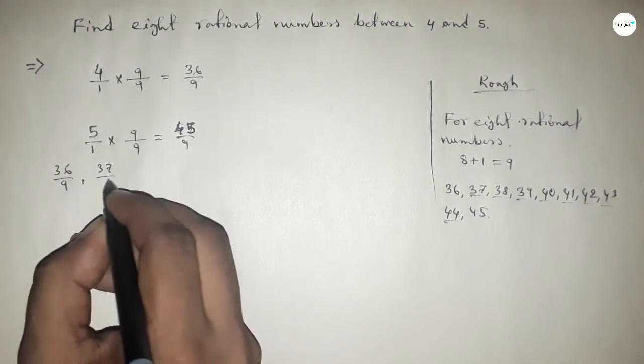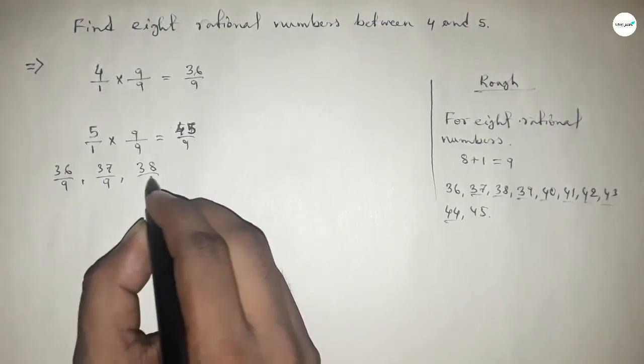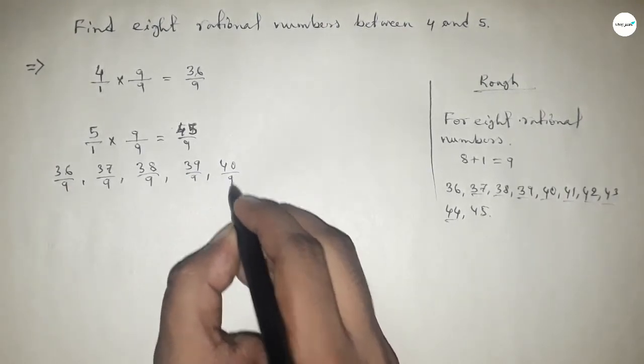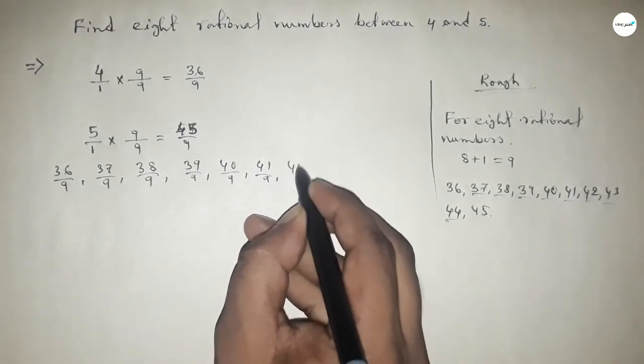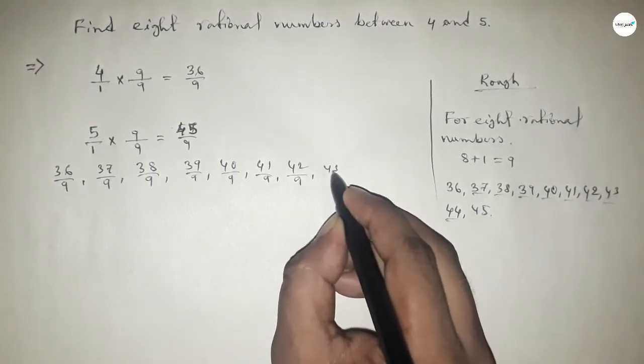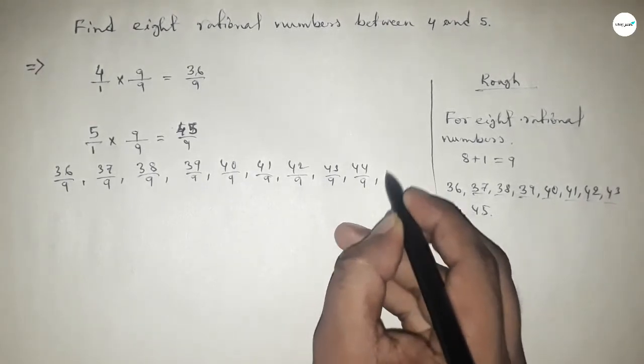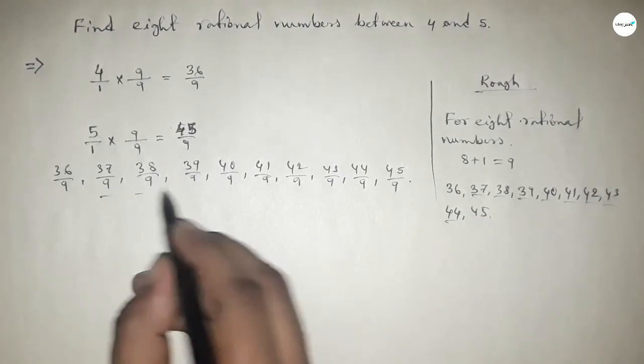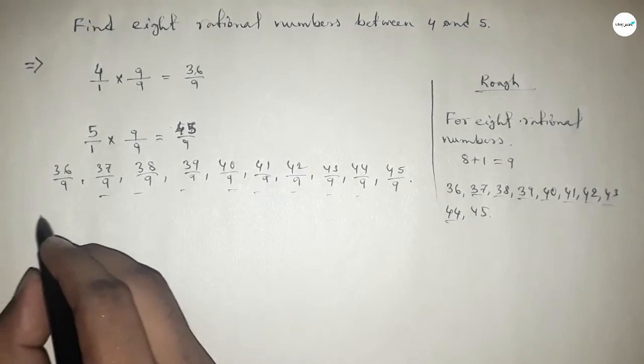So 36 over 9, 37 over 9, 38 over 9 up to 45 over 9. So these are all the rational numbers, and from this these are the required eight rational numbers between 4 and 5.